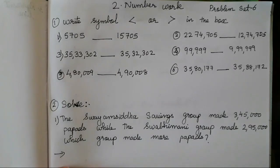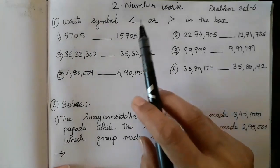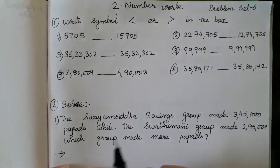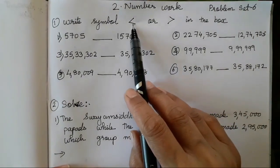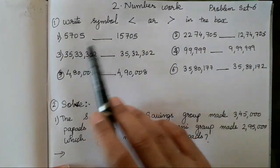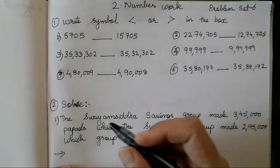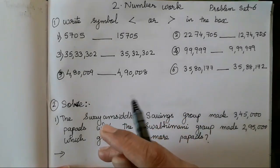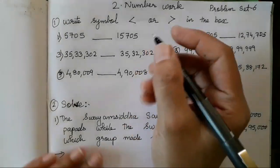Hello everyone, today we are going to study chapter number 2 in number work, problem set number 6. In this exercise, we are going to study about the smaller and the bigger numbers, and we have to study how to write and use these symbols in order to represent the smaller and the bigger numbers. It's very easy, as we did for all the questions — in the same way, you all have to do it.